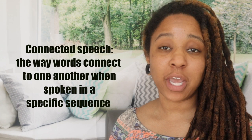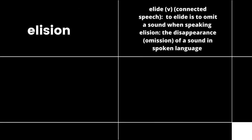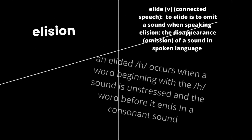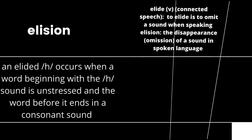Connected speech is the way words connect to one another when spoken in a specific sequence. To elide means to omit a sound when speaking, and elision is the disappearance of a sound in spoken language. An elided H sound occurs when the word beginning with the H sound is unstressed and the word before it ends in a consonant sound. But remember, this does not occur 100% of the time — these are just tendencies.